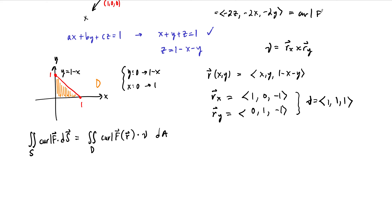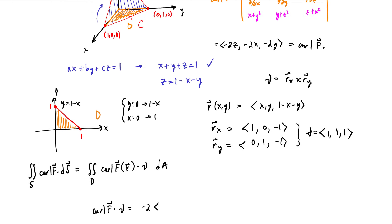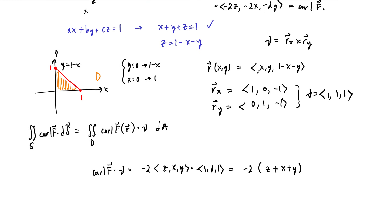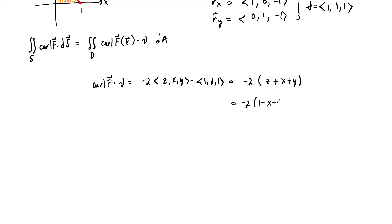Now, the curl of F dotted with ν: the curl is (−2Z, −2X, −2Y), so the negative 2 can factor out. We have (Z, X, Y) dotted with (1, 1, 1), giving negative 2 times (Z plus X plus Y). Substituting Z equals 1 minus X minus Y, this becomes negative 2 times (1 minus X minus Y plus X plus Y), which simplifies to negative 2 times 1, which is just negative 2. That's our integrand.